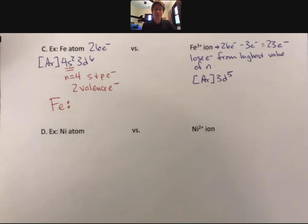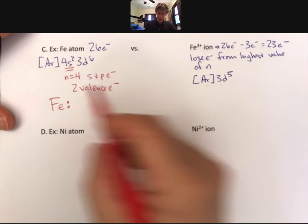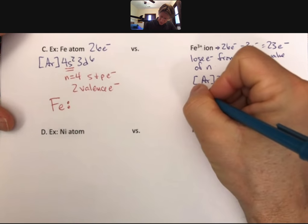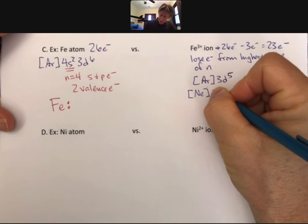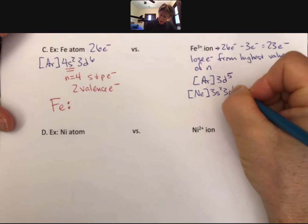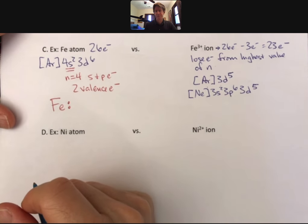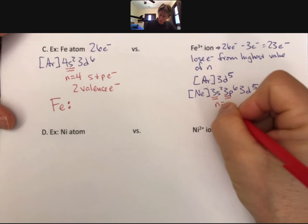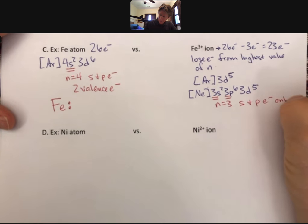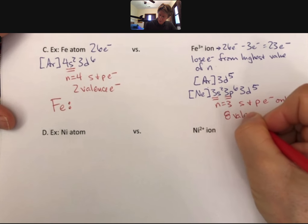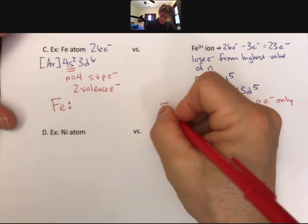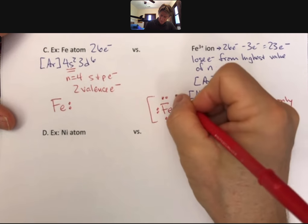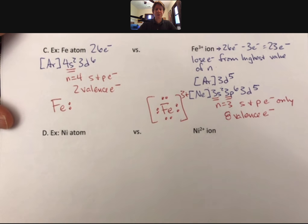Similar to what happened for sodium, we lost our n equals 4 principal energy level, and so now we can go back and do instead of argon, let's do neon 3s2, 3p6, and then we add on our 3d5. It's the highest value of n, s and p electrons only. So there are eight valence electrons, and we get Fe with 8 dots, with a 3 plus charge surrounding its brackets.